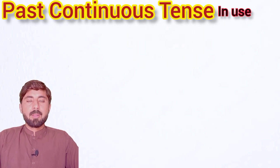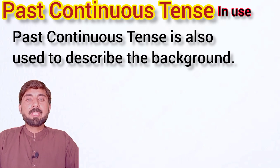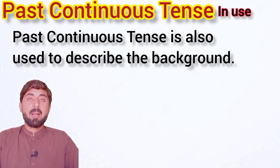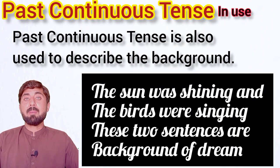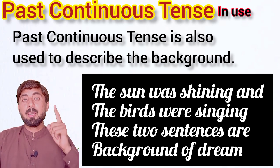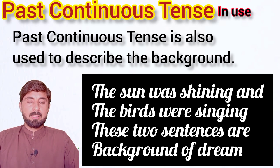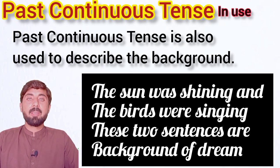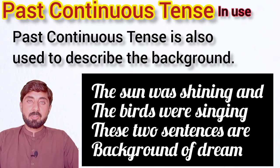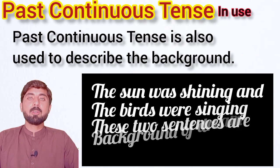The second use of this tense is that we use past continuous tense to describe the background of anything. For example, if I say that I saw a dream: 'I was sitting in a park. The sun was shining. The birds were singing.' Here I am describing the background of my dream. You can also say that there was an actor — he was performing his act and behind it some people were dancing. So backgrounds of anything are described in past continuous tense when you have to describe them in the past.